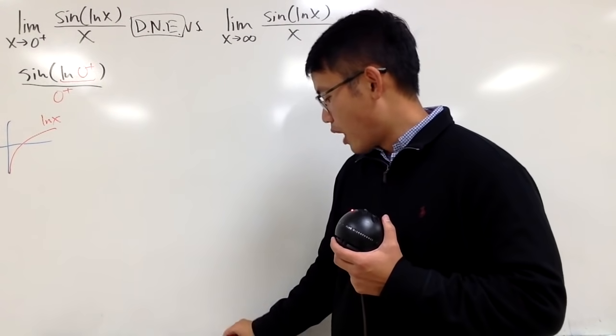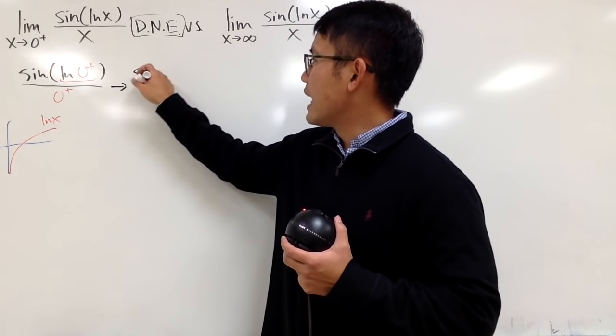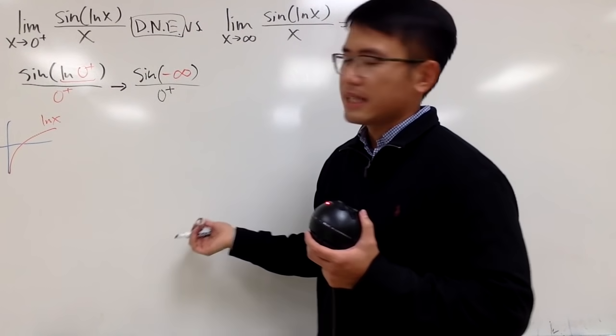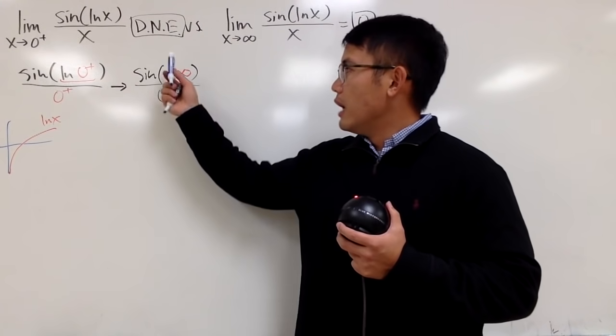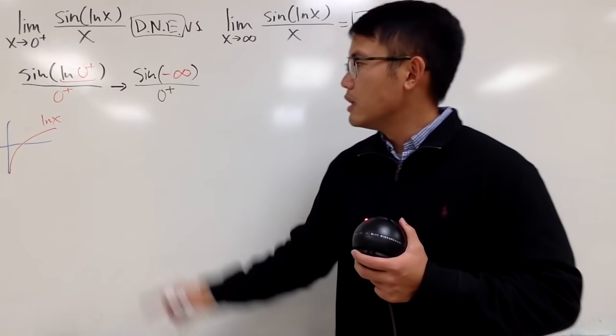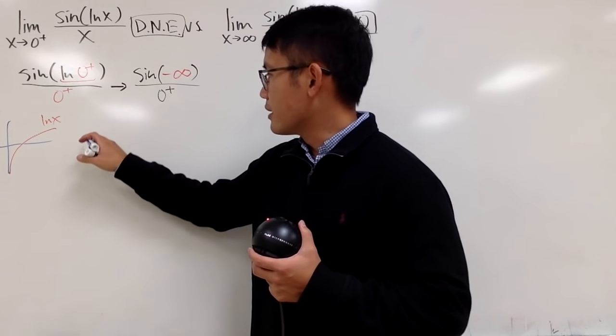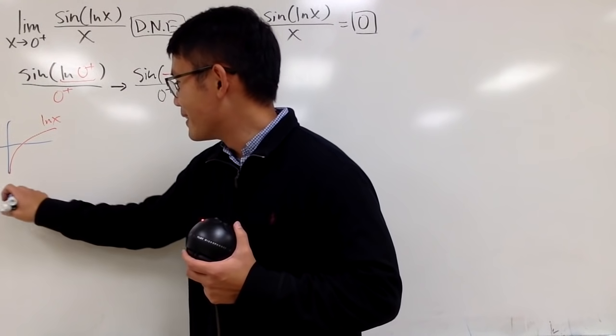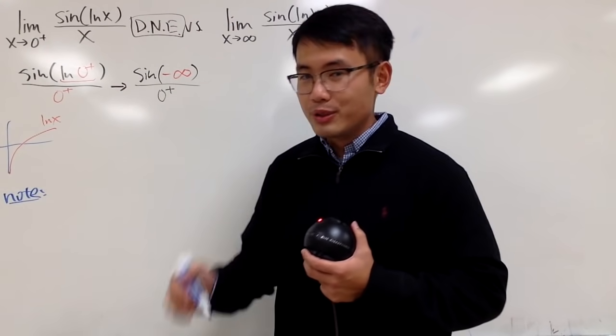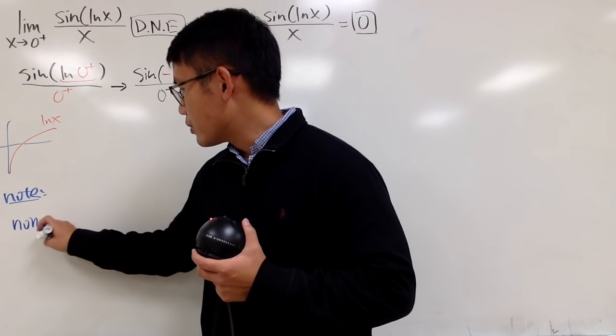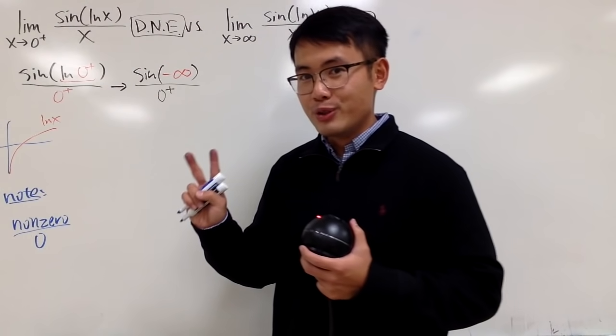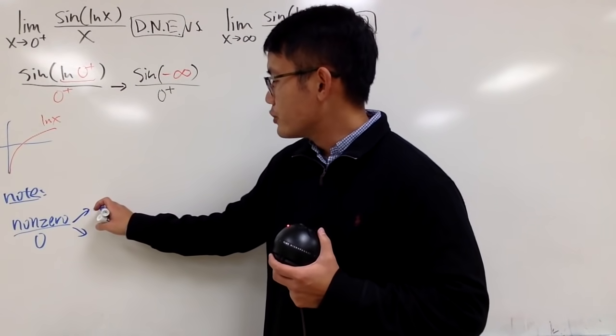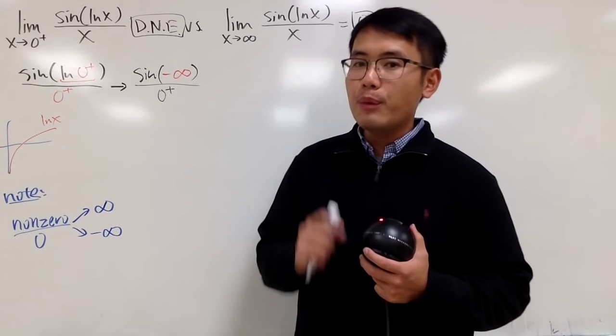You can just use the graph of ln to argue that. So, you can say this right here approaches sin, and then the input here is now negative infinity, and then you have over 0 plus like that. Well, on the top, let's not worry about it yet. Let's focus on the bottom because when you have 0 plus in the denominator, let me just make another note for you guys right here. So, whenever you have a non-zero number divided by 0, you get two situations. And let me just put this down for you. Non-zero over 0, you really have two situations in the limit situation, right?